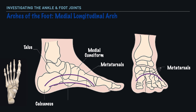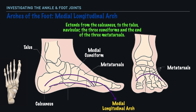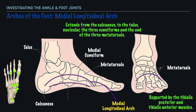Now let's turn our attention to the arches of the foot, which are formed by the unique combination of our 26 bones along with our ligaments that support them. In total, we have three arches, and of these three, two are referred to as longitudinal arches. The first arch we'll take a look at is the medial longitudinal arch, which is on the medial aspect of the foot, and it extends from the calcaneus to the talus to the navicular, the three cuneiforms, and the end of the three metatarsals. This particular arch is stabilized or supported by the tibialis posterior and tibialis anterior muscles.